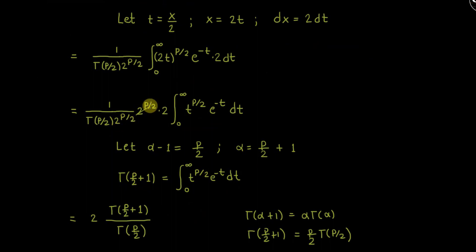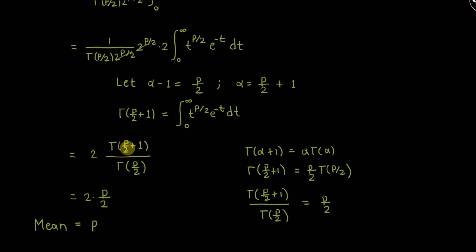We can cancel out the 2^(p/2) factors, leaving us with 2 · Γ(p/2 + 1) over Γ(p/2). Using the recursive identity Γ(α + 1) = α · Γ(α), if we let α = p/2 then Γ(p/2 + 1) over Γ(p/2) equals p/2. So the expression becomes 2 times p/2, and canceling the 2s gives us p as our mean.